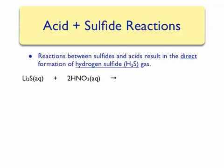For example, if we react lithium sulfide with nitric acid, we can determine the products by doing a double displacement. If we combine the H⁺ ions from the nitric acid with the sulfide ion from lithium sulfide, we will get H₂S, which will bubble out of solution as a gas. The second product comes from the combination of lithium ions and nitrate ions, resulting in the formation of lithium nitrate.